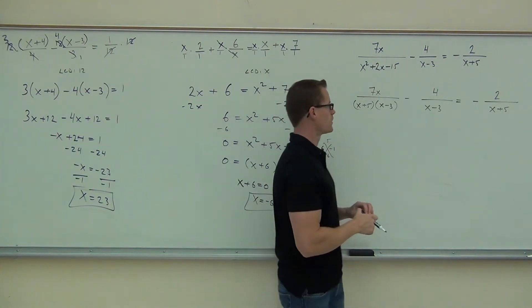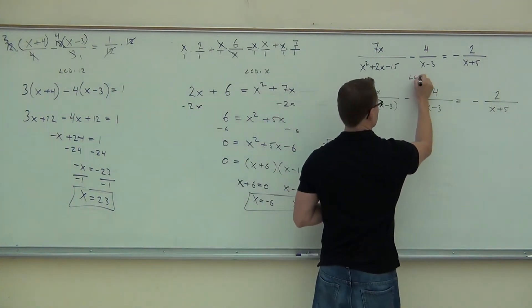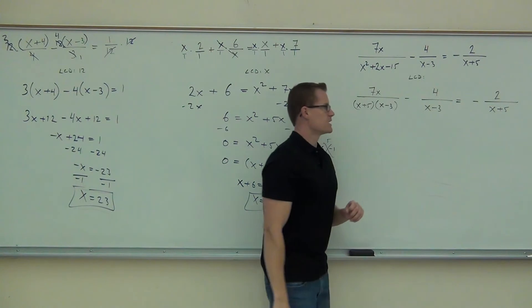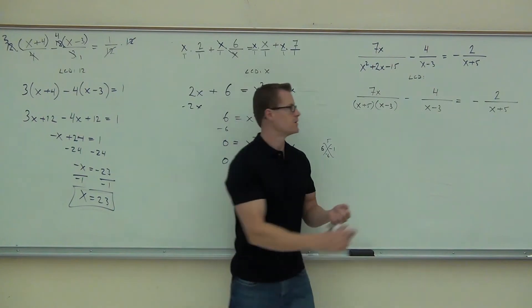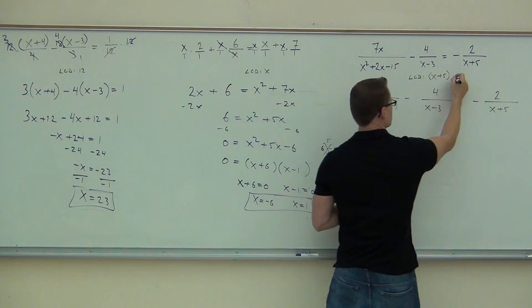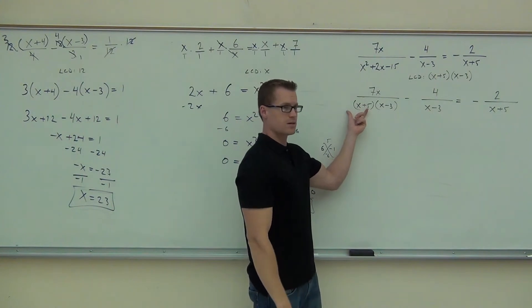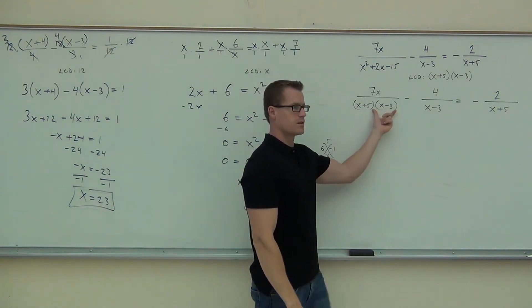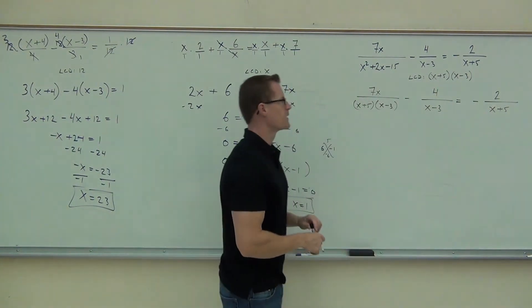Okay, let's find our LCD. The LCD is a listing of every different factor that you have. Can you see the LCD up here? What's one factor? What's another factor? What's another factor? Is that it? Check: x plus five — we have that; x minus three — we have that; x minus three — we already got that, we don't need it twice; x plus five — yeah, we got that. That's our LCD.